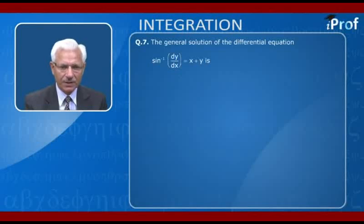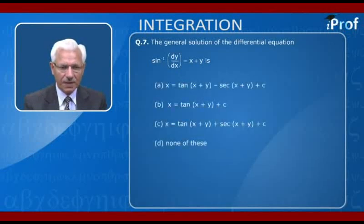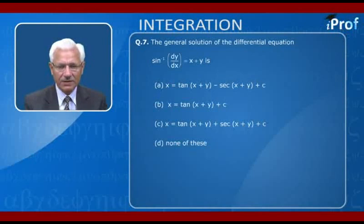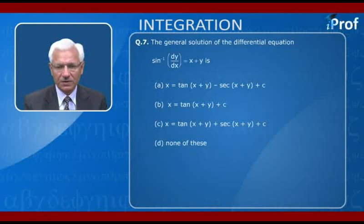Solve: sin⁻¹(dy/dx) = x + y. Options are: (a) x = tan(x+y) − sec(x+y) + c, (b) x = tan(x+y) + c, (c) x = tan(x+y) + sec(x+y) + c, and (d) none of these.